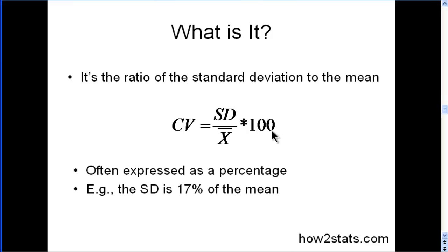As I just mentioned, it's often expressed as a percentage. So somebody might say something like the standard deviation is 17% of the mean. So that 17% is the coefficient of variation.